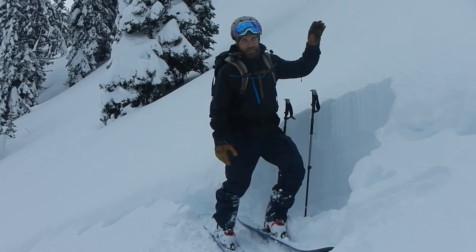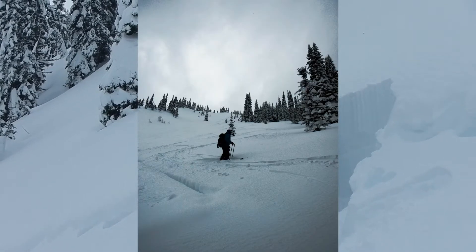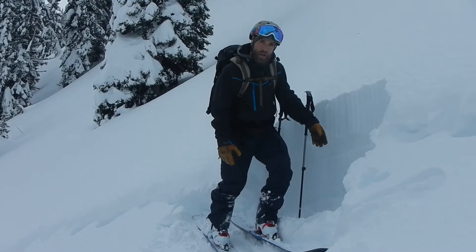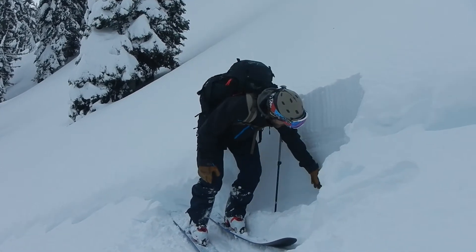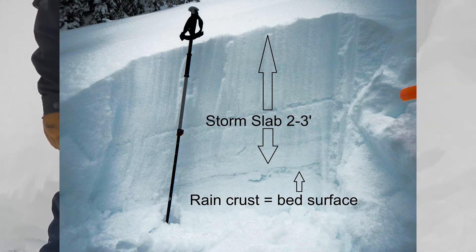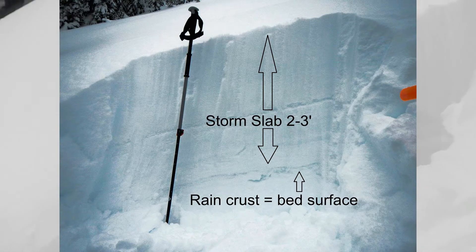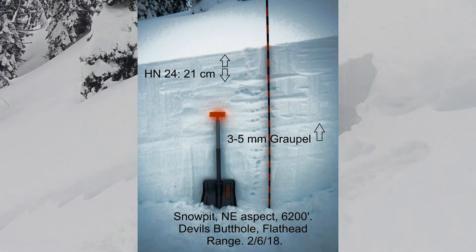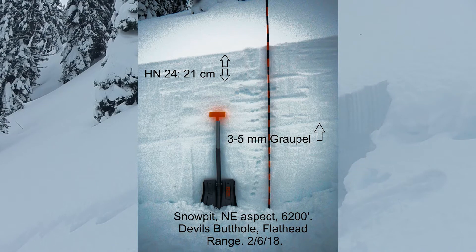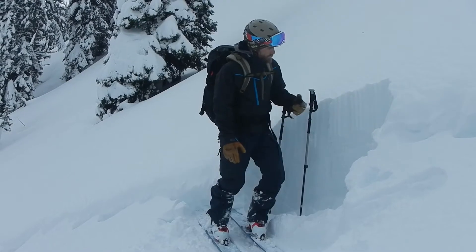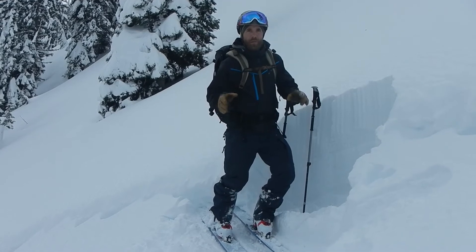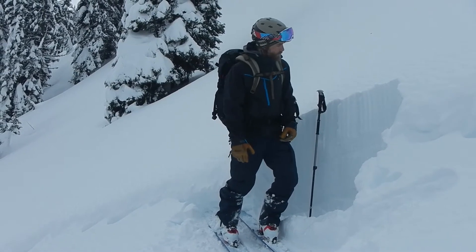We descended only about 500 vertical feet from the top, and when inspecting this crown line, what we noticed is that this avalanche failed on a rain crust that's about 2-3 feet below the surface. This particular rain crust was absent in our pit up top, which was at about 6200 feet, which makes sense because a lot of our observations have been hinting that the freezing level fluctuated around 5500 feet during this last storm cycle.